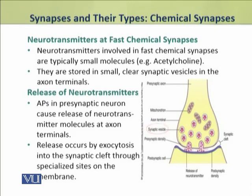Action potentials in the presynaptic neuron cause the release of neurotransmitter molecules at the axon terminals. This release occurs by exocytosis, in the region called the synaptic cleft, through specialized sites on the membrane.